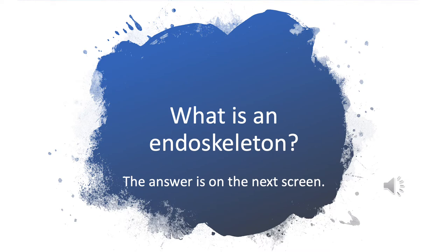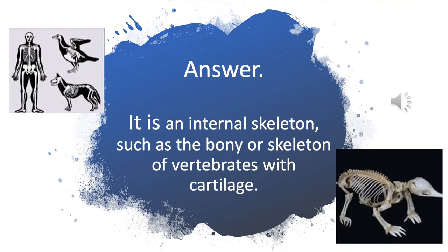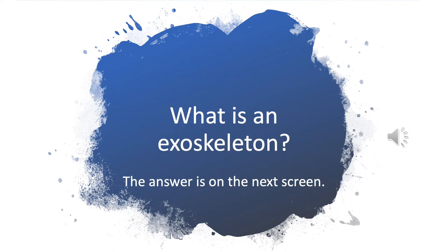Answer: an endoskeleton is an internal skeleton, such as the bony skeleton of vertebrates, with cartilage. What is an exoskeleton? Think of some ideas and write them down — what could it be? Use the word 'exo' as the prefix to see if that gives you an idea about the skeleton.